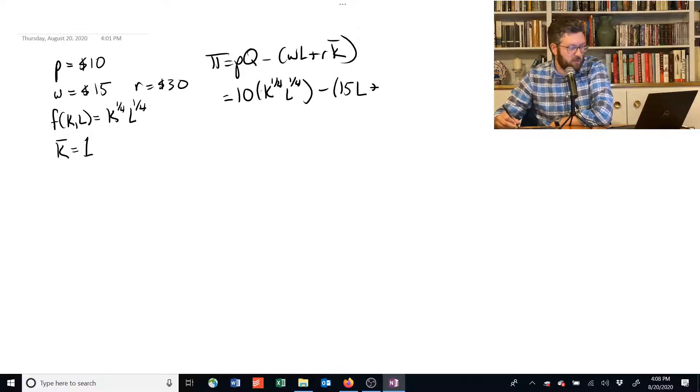And we've got a capital rental rate of 30 and one unit of capital that we're buying. And we actually need to substitute in that one unit of capital there too.